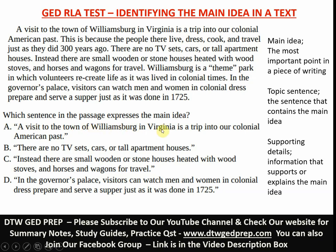Option A says: 'A visit to the town of Williamsburg in Virginia is a trip into our colonial American past.' This is likely the right option, but let's go further to the other options. Option B says: 'There are no TV sets, cars or apartment houses.' What is this referring to? It's referring to the colonial American past — so this is not the main idea; it's a supporting detail. Option C says: 'Instead, there are small wooden or stone houses heated with wood stoves and horses and wagons for travel.' This is still talking about Williamsburg's colonial past — also a supporting detail. Option D says: 'In the governor's palace, visitors can watch men and women in colonial dress prepare and serve supper just as it was done in 1725.' This is also a supporting detail. So we have struck out B, C, and D — they cannot be the answer.